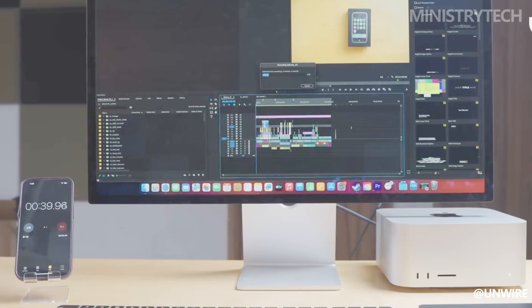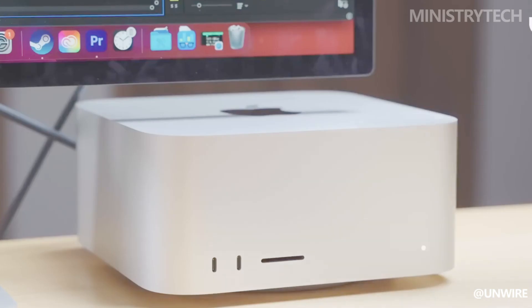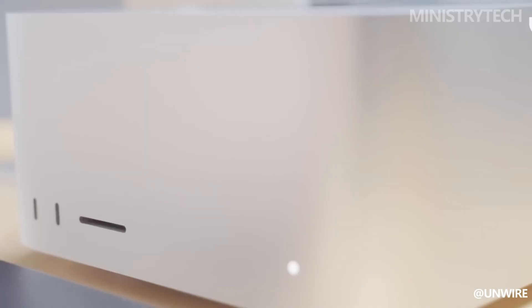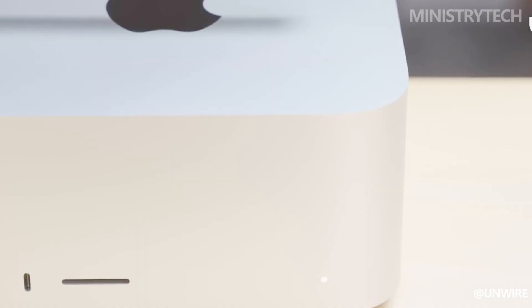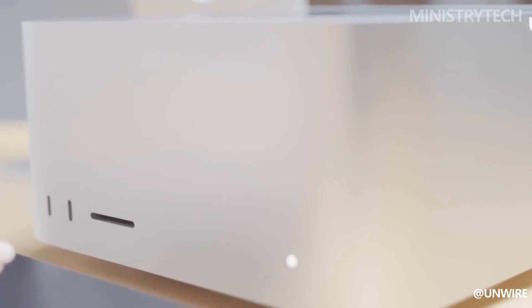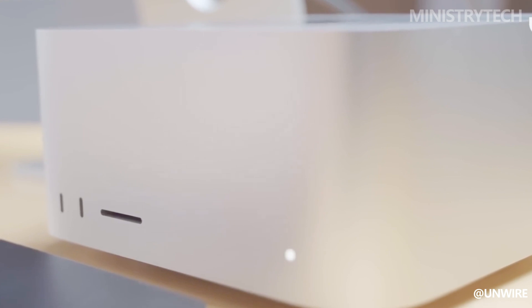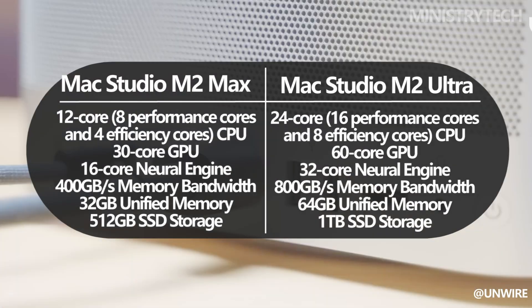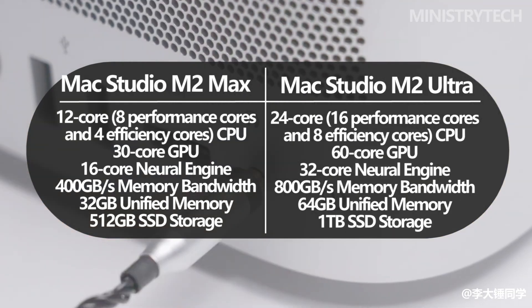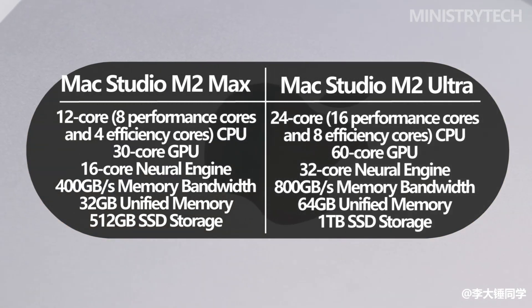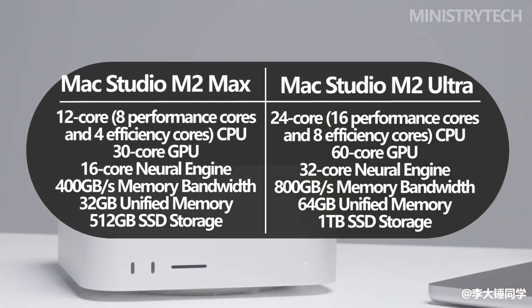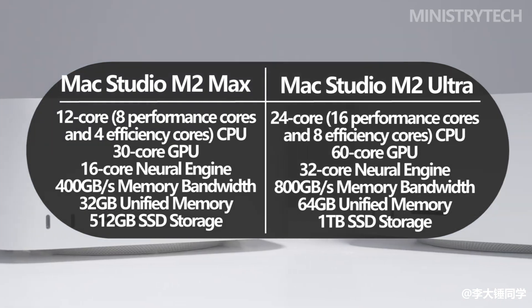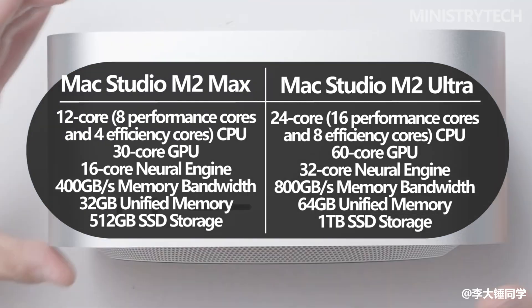When it comes to specifications, both the M2 Max and M2 Ultra are expected to feature impressive hardware configurations, including high-speed memory, ample storage options, and advanced graphics capabilities. Furthermore, comparing the specifications makes it evident that the M2 Ultra base model offers additional advantages beyond just the enhanced chip. It provides more unified memory and SSD storage compared to the M2 Max, meaning that even at the base configuration, the M2 Ultra provides a more robust and feature-rich package.